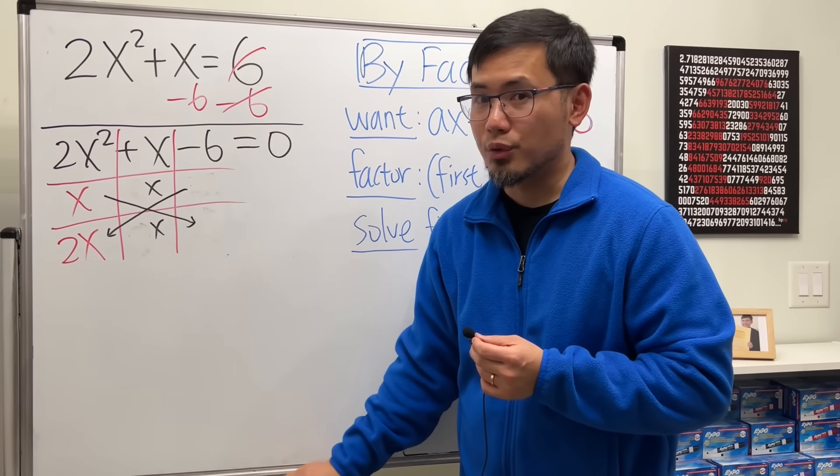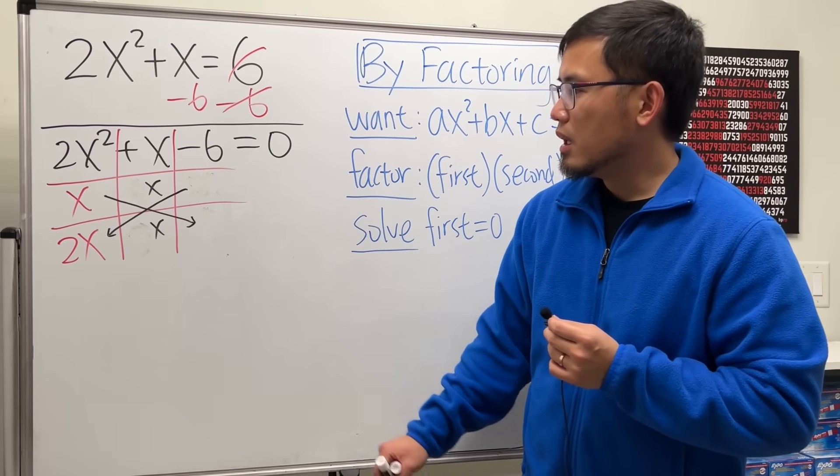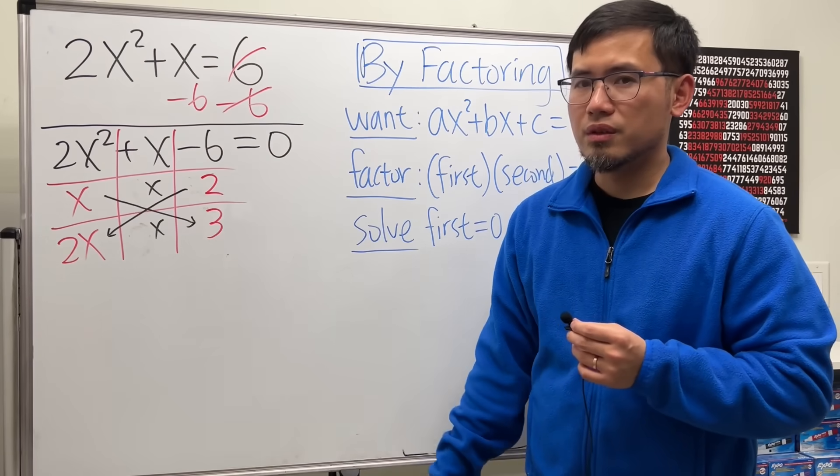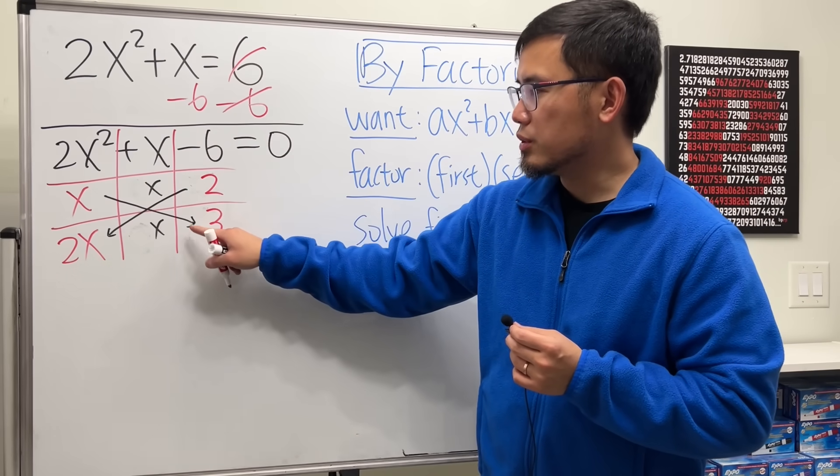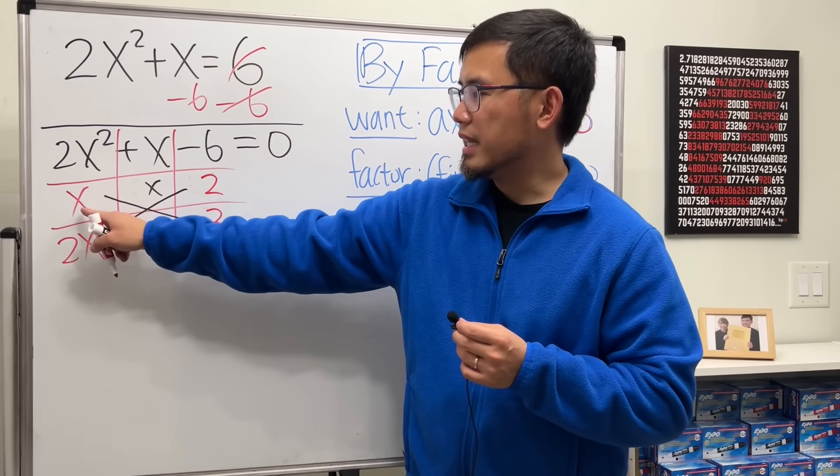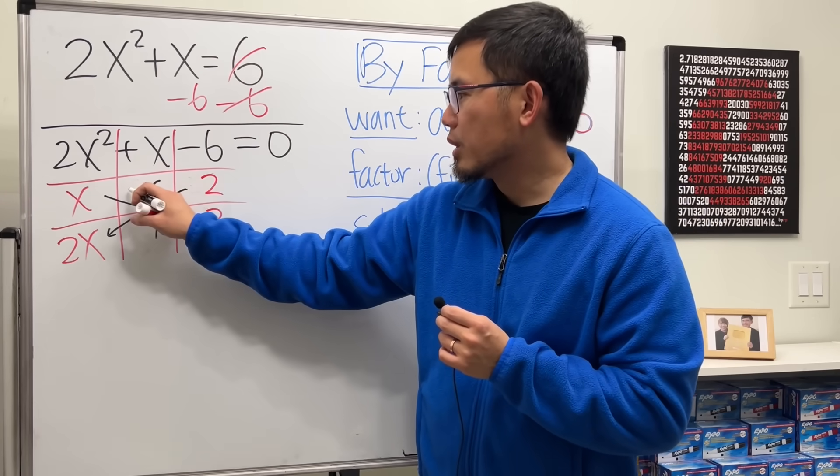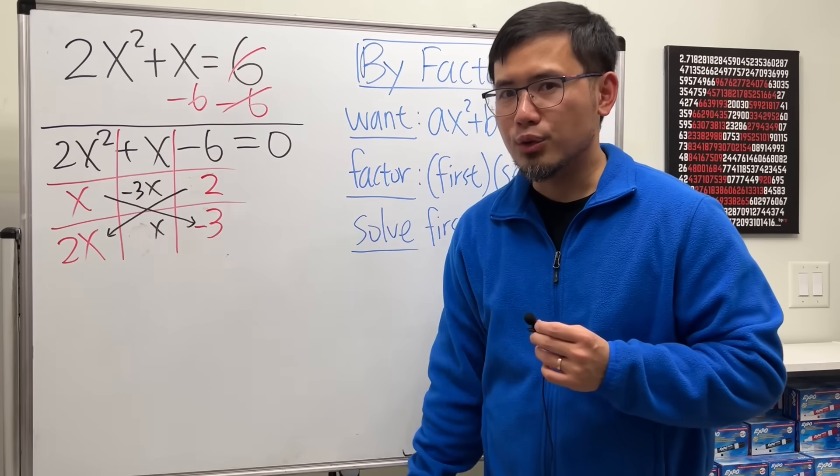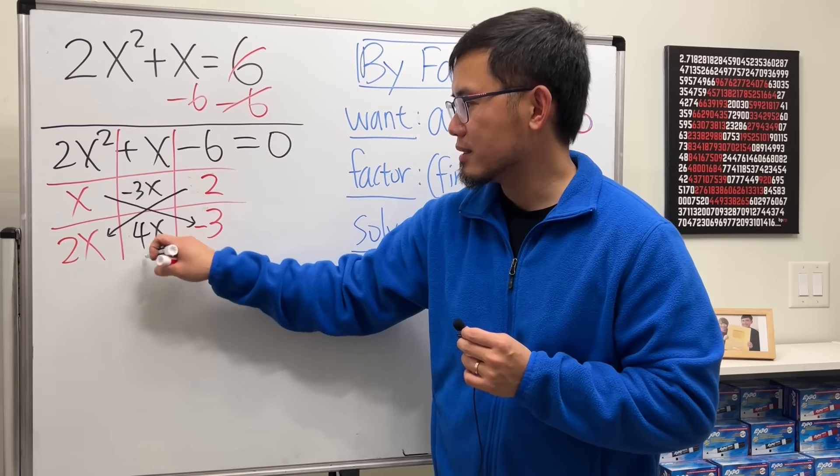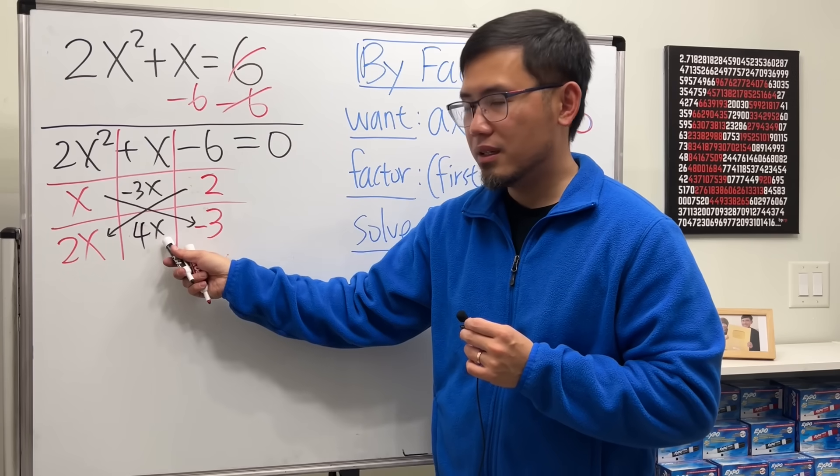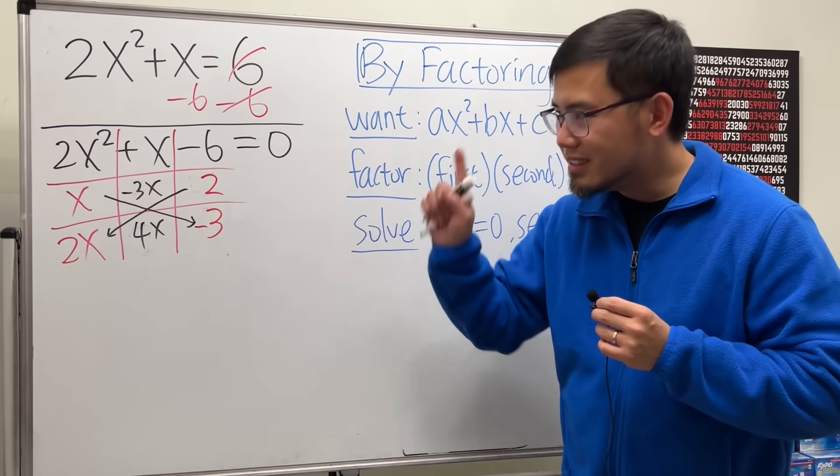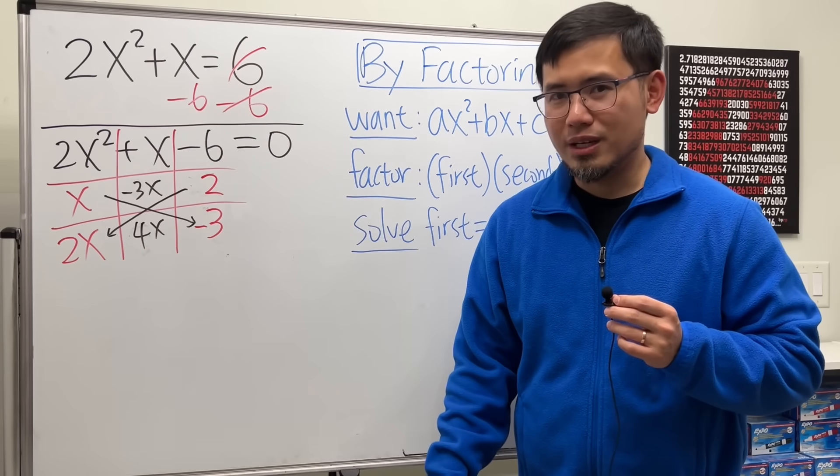Yeah, we can use 2 and 3 as well, right? And one of them has to be negative. Let's go ahead and put down 2 here and 3 here. Which one should be negative? You can, of course, put it here and then just give it a try. It actually works. If you put negative 3 here, you do x times negative 3, that will give us negative 3x. And then you do 2 times 2x, which is 4x. Together, negative 3x plus 4x. Do we end up with x? Yes. So we have found our correct combination.